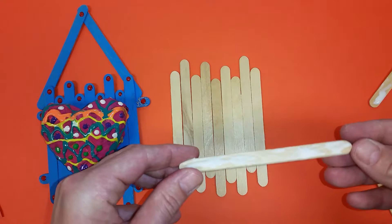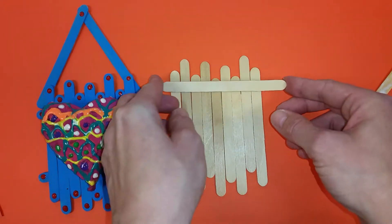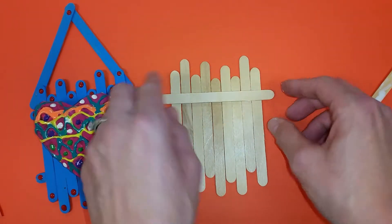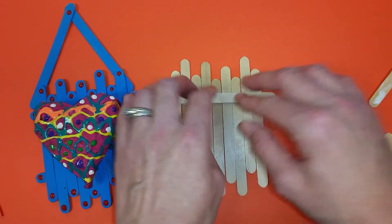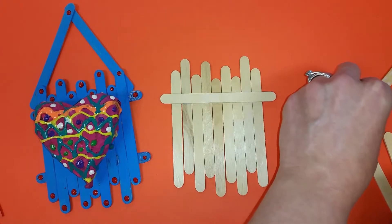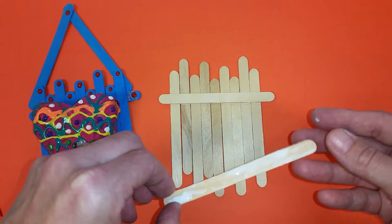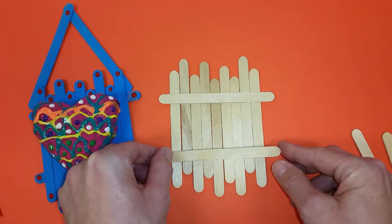You're going to take glue and put on one of your strips and put it across this way and press it down gently. You're going to take glue and put it on another strip and this is going to connect them all together.